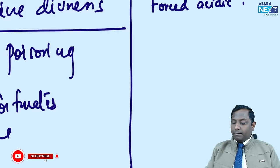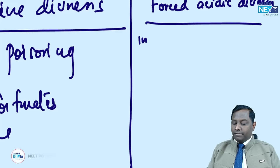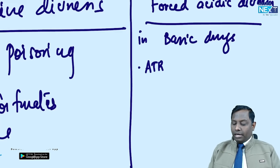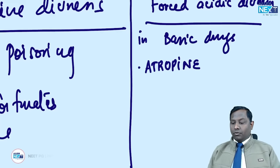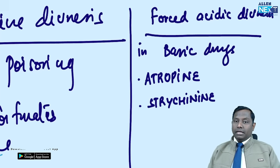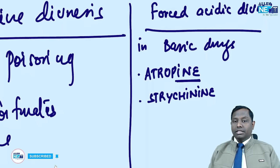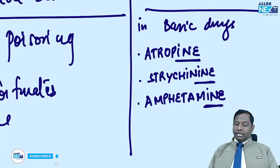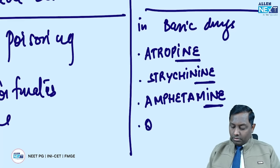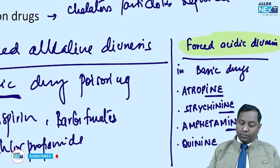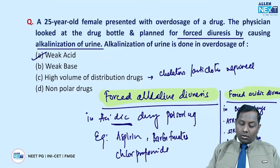Forced acidic diuresis is done in basic drug poisoning — for example, atropine (antidote: physostigmine; if unavailable, forced acidic diuresis), strychnine, and amphetamine. These basic drugs end in '-ine': atropine, strychnine, amphetamine, quinine. All are examples of basic drugs requiring forced acidic diuresis. No drug is a strong acid or strong base — always weak acid or weak base.